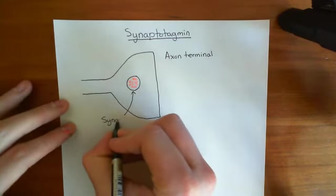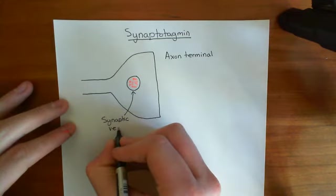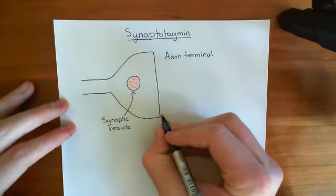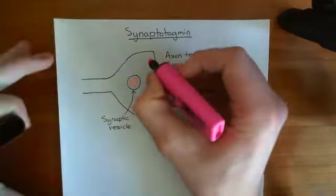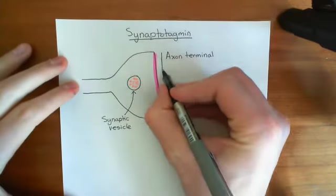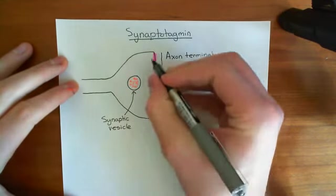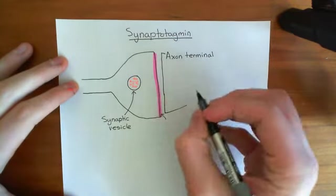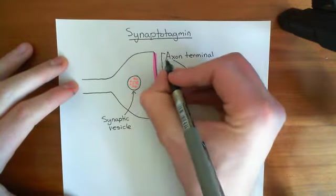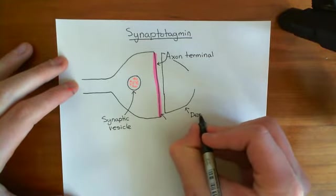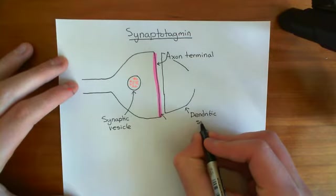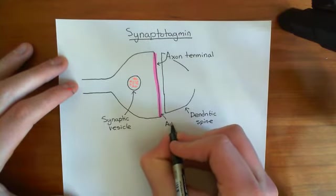In the axon terminals of neurons, what happens to the synaptic vesicles is they dock at what's known as the active zone. This portion of the membrane of the axon terminal — which actually faces the postsynaptic cell, potentially a dendritic spine — is known as the active zone of the presynaptic membrane.